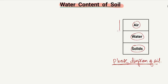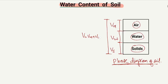The volume of the air is represented by VA, the volume of the water is represented by VW, and the volume of the solids is represented by VS. The total volume of the soil sample is the combination of volume of air, volume of water, and volume of solids.